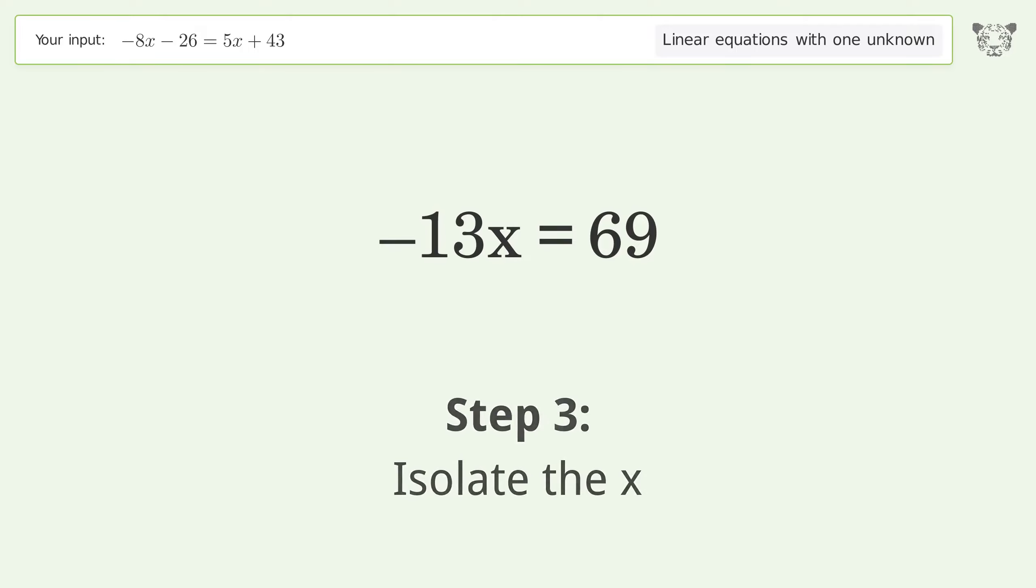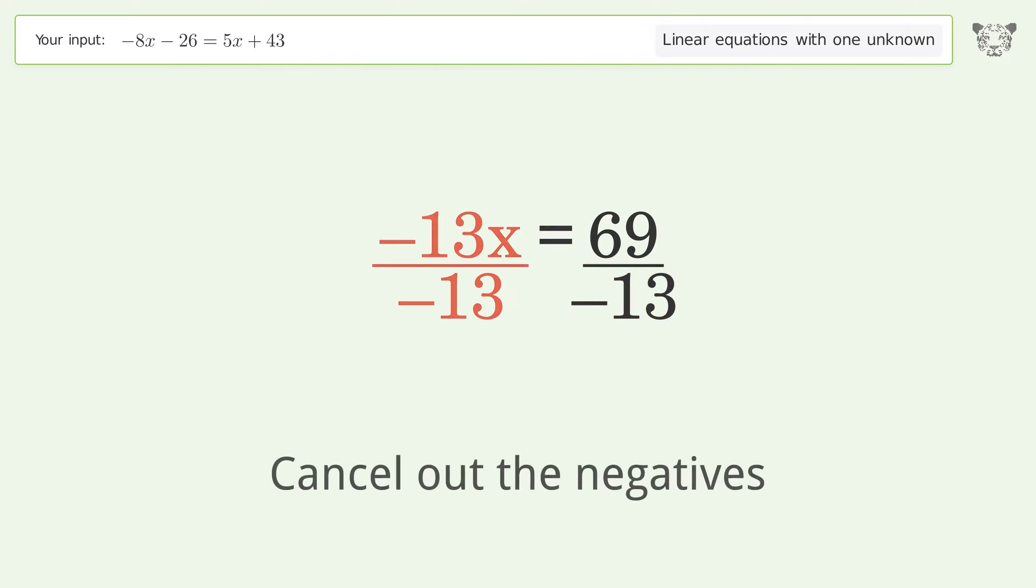Isolate the x. Divide both sides by negative 13. Cancel out the negatives.